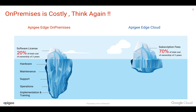You also have to handle implementation and training of your resources who will be managing Apigee on-premises inside your data centers or private clouds. When it comes to Apigee Edge cloud, the only thing you need to worry about is API implementation and making sure your team understands the Apigee Edge platform and how to get started building APIs. To conclude, think twice before choosing on-premises over Apigee Edge cloud. With Apigee Edge cloud, you don't need to worry about any operations or SLAs — Apigee takes care of it, and you just focus on building your API programs.